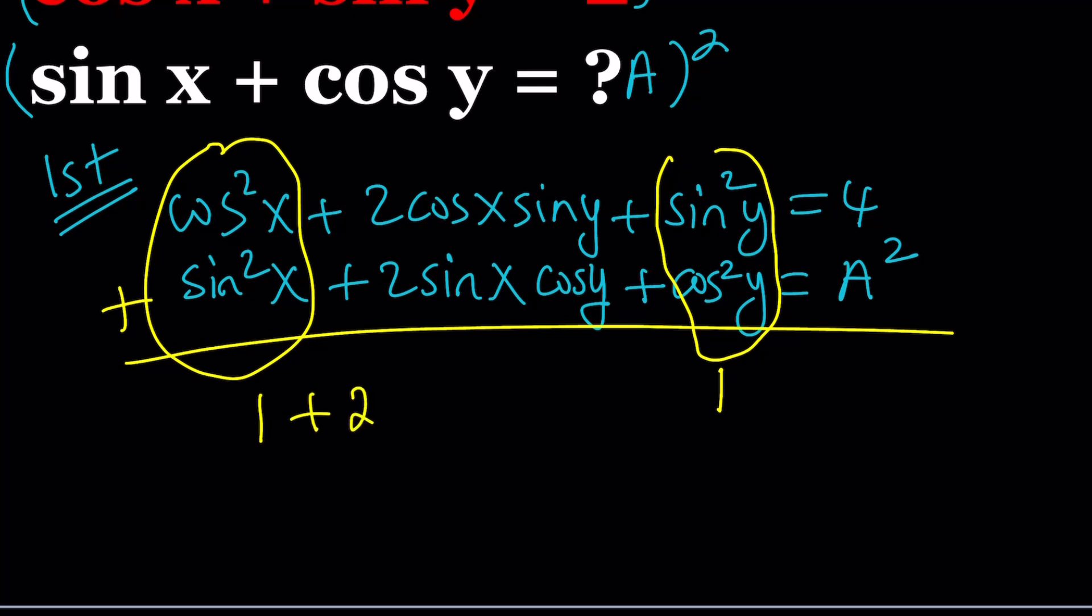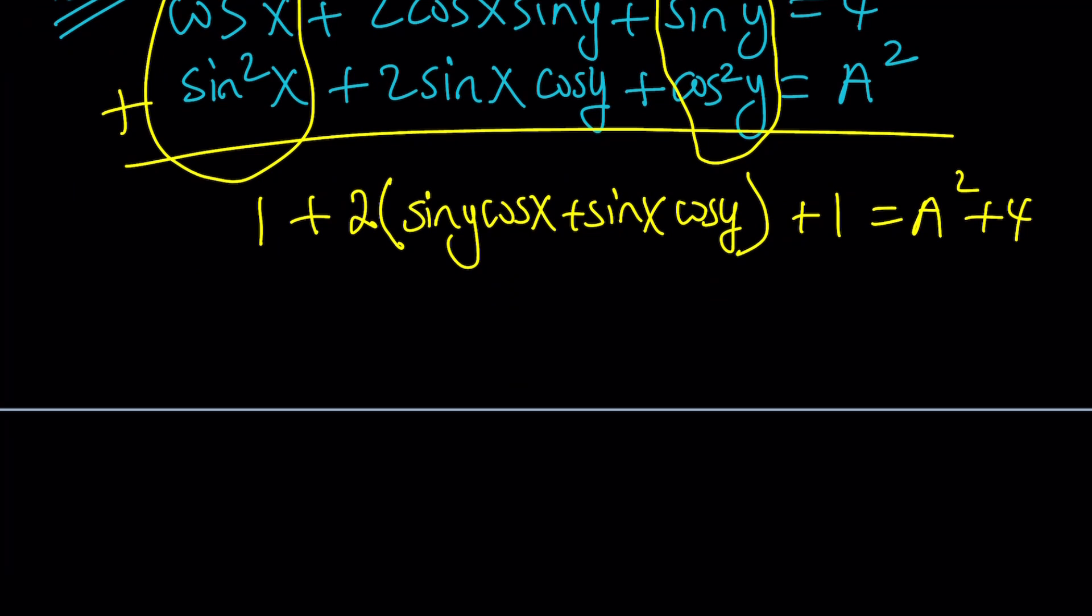And then in the middle, I get 2 times something. Let's go ahead and write it down first, and I like to write the sine first. Sine y cosine x plus sine x cosine y. I'm going to have to move this a little bit. Sine x cosine y. 2 times that, plus 1, is equal to a squared plus 4.